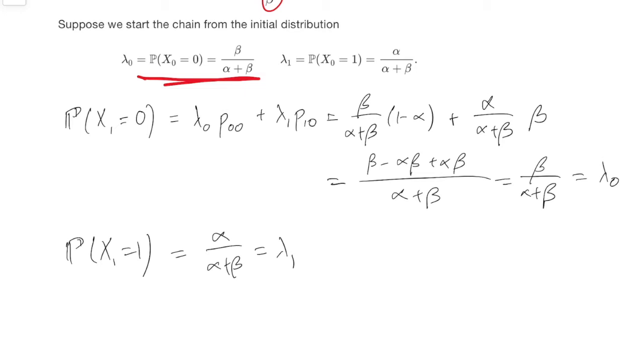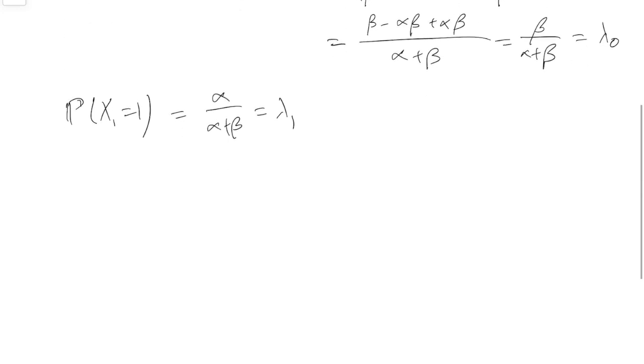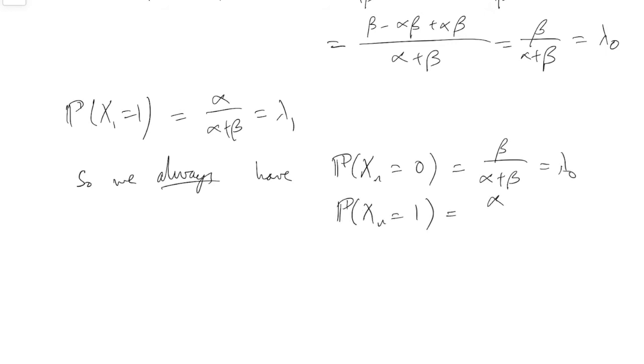So we can just continue the argument again, right? After two steps, the same distribution. After three steps, the same distribution. So we always have probability Xn equals 0 being beta over alpha plus beta equals lambda 0. And the probability Xn equals 1 being alpha over alpha plus beta equals lambda 1. For all n,